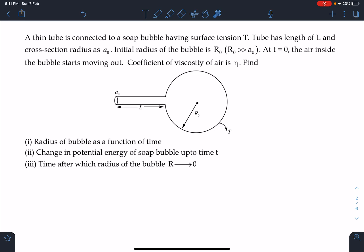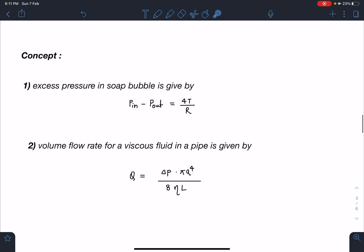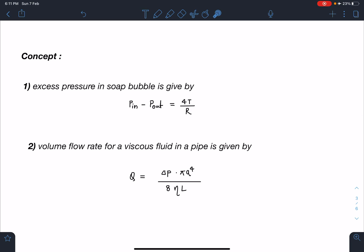Let's start this problem. The concept part: the excess pressure in the soap bubble is given by the pressure inside and outside. That pressure difference is going to be 4T/R where T is the surface tension and R is the radius of it.